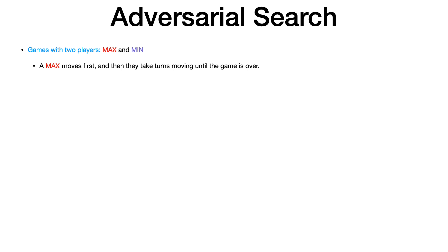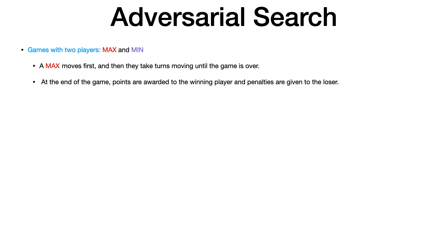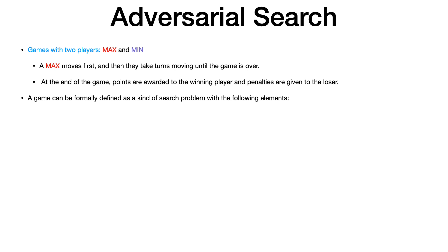Games in adversarial search are generally two-player, though multi-player cases exist. In the two-player case, one player is called Max and the other Min. Max typically makes the first move. At the end of the game, points are assigned to both agents at terminal nodes, and the utility function provides a value for each terminal state.